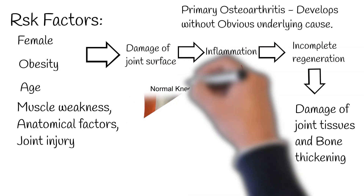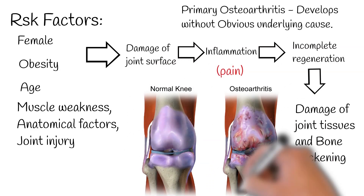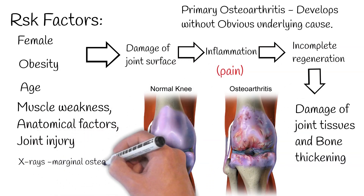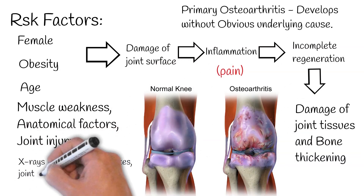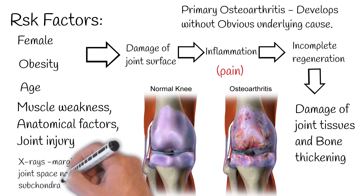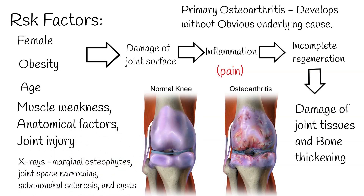X-rays of the affected joint can show marginal osteophytes, joint space narrowing, subchondral sclerosis, and cysts. However, radiographic findings do not correlate to the severity of the disease and may not be present early in the disease.